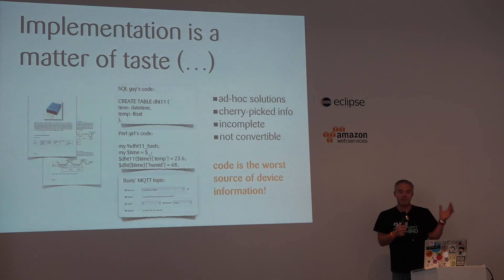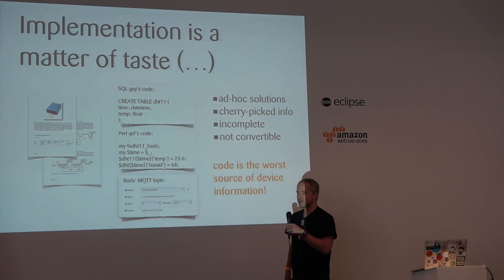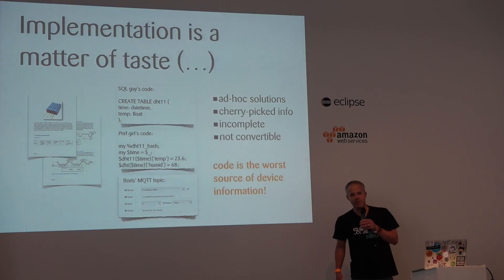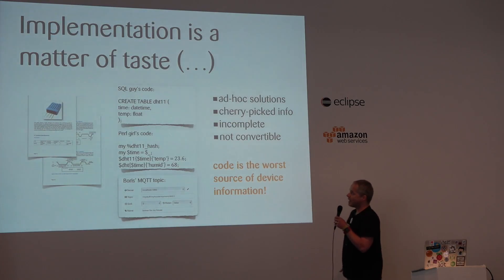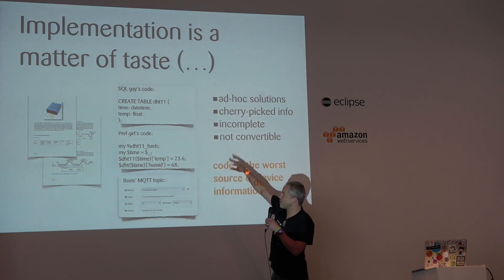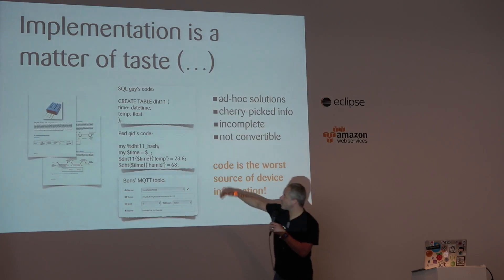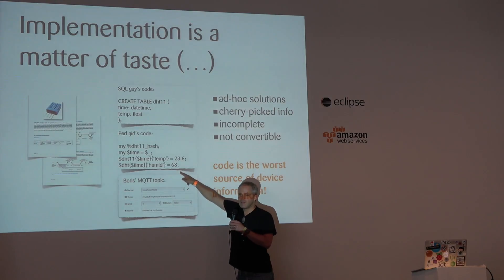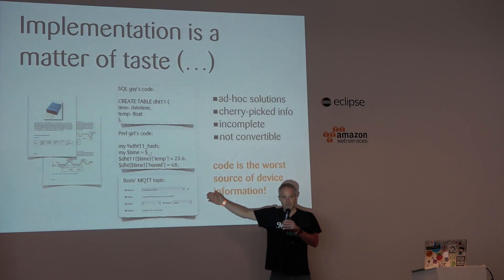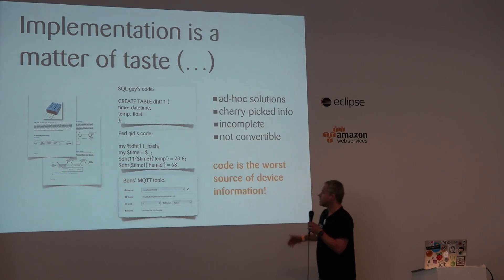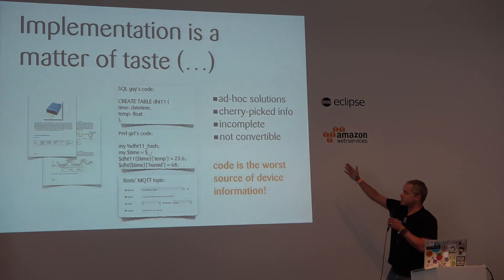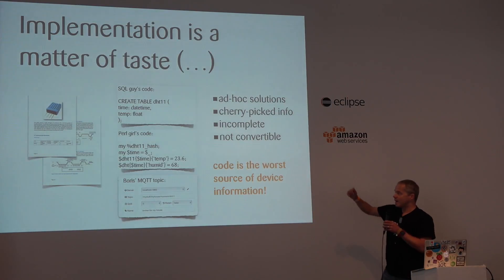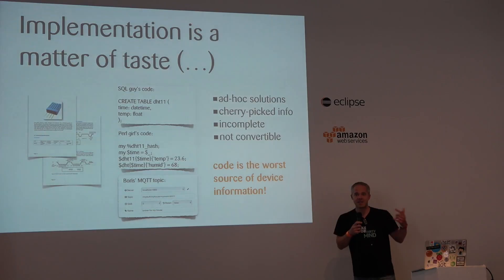So why information models? Of course implementation is a matter of taste. You take the data sheet for DHT11 — it's some five or six pages, mostly how to communicate with it over the interface. Then an SQL guy wrote some code: we create a table with a daytime and a float. A Pearl girl wrote some other code — it seems to have a temperature somewhere, and there's probably something which might read humidity. Is that an integer or a float? I don't know. And then someone just gives you their MQTT topic — go figure what it means. Essentially, everyone here is providing an ad hoc solution. It's cherry-picked properties of the sensor and it's not really convertible between each other. Code is possibly the worst source of information if you're communicating your device capabilities to somebody.